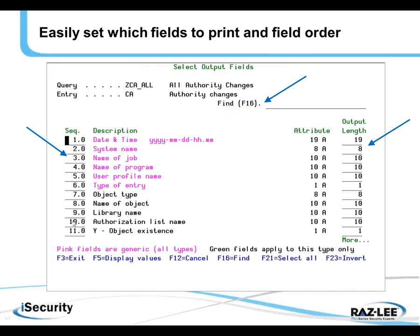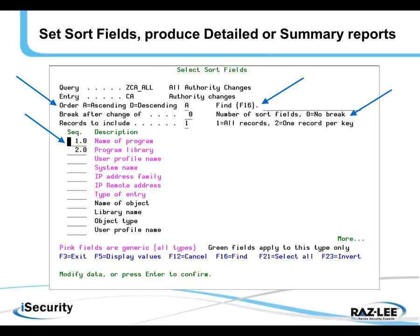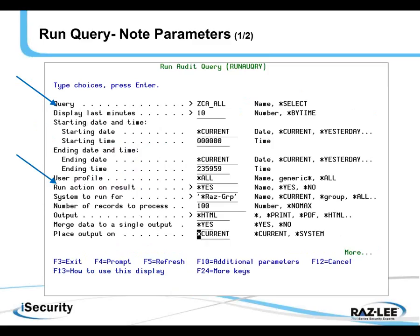When we select output fields, we can select the order of the output fields. We can find a particular output field by just typing in a few letters, and we can set the output length as well — so we have full control over the output. Regarding sort, we can set the sort fields, sort in ascending or descending order, decide to break after a number of sort fields, and we can also — a unique feature — include just one record per key in the output, which is often used to provide summary reports. Many of these features are requests from our customers.